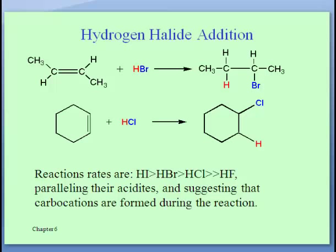Here's the slide from the end of the previous video. It's important to notice that when you're drawing these products, you can sometimes draw them differently from how you see on the screen and it be equally correct. When you take 2-butene and react with HBr, the only product you can get is 2-bromobutane — you can put the bromine on the carbon second from the left instead of second from the right; it's still 2-bromobutane. Similarly, chlorocyclohexane is chlorocyclohexane whether the chlorine is placed at one position or the adjacent location.